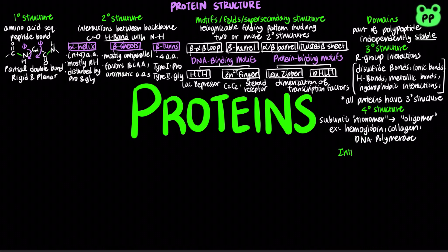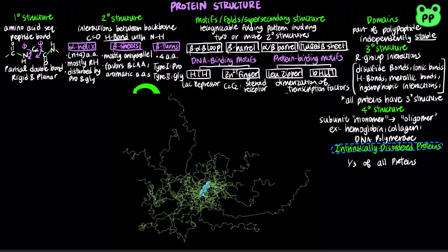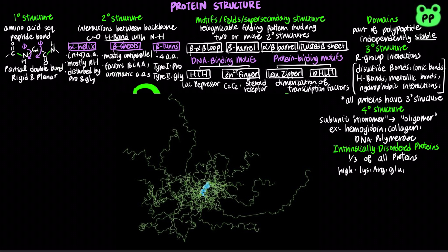As many as a third of all human proteins have significant unstructured regions, known as intrinsically disordered proteins, which are characterized by high densities of charged amino acid residues such as lysine, arginine, and glutamate, as well as proline residues.